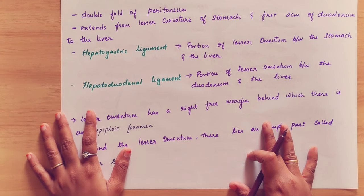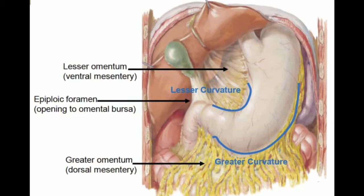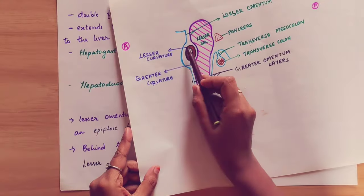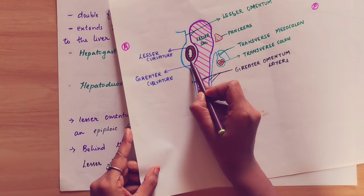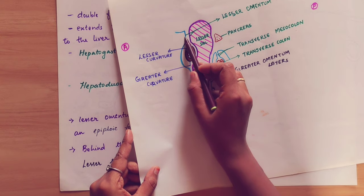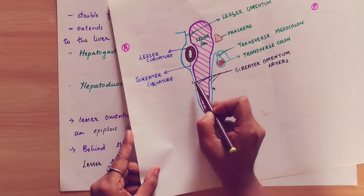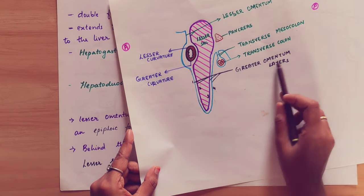Lesser omentum is not the same as greater omentum. If we attach the lesser curvature to the peritoneal layer, we are talking about lesser omentum. If we attach the greater curvature to the peritoneal layer, we call it greater omentum. In the lesser curvature, we attach a double layer — that is the lesser omentum. In the greater curvature, we have four layers attached — that is the greater omentum.